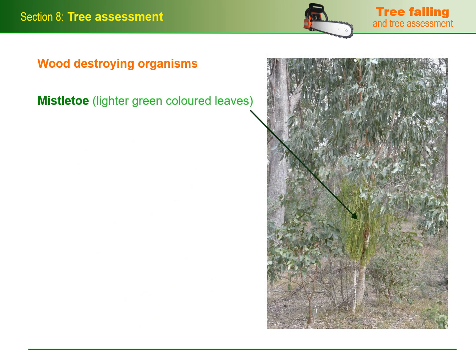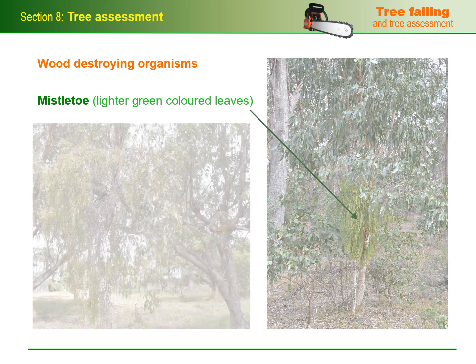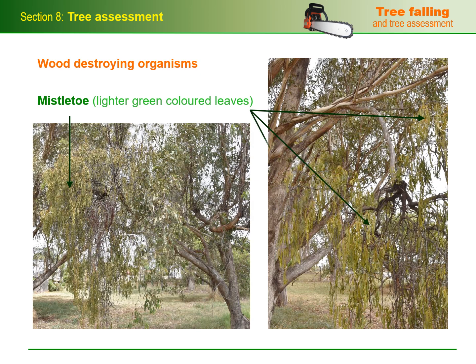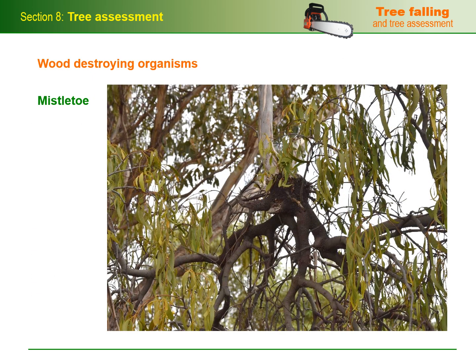Mistletoe is a common name for a range of parasitic plants that attach themselves to host trees and feed off their sap stream. Although mistletoe plants don't destroy wood fibers in the same way that fungi and termites do, they can still send a tree into decline by progressively taking up more and more of its food supply and eventually killing the branch they're growing on. Some trees are able to recover by dropping the affected branches, but in severe cases the mistletoe ultimately kills the whole tree.